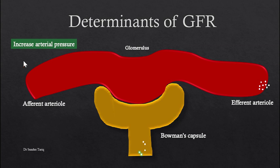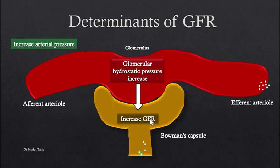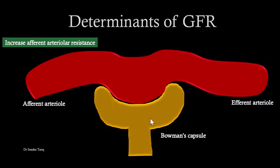Whenever arterial pressure increases, it leads to an increase in capillary hydrostatic pressure — specifically, the glomerular hydrostatic pressure increases. This increase in hydrostatic pressure favors the filtration of fluid into the Bowman's capsule, thus increasing GFR.